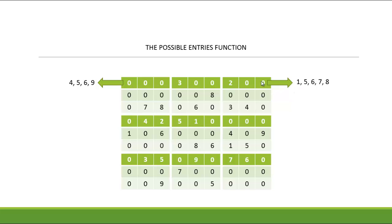Similarly you can do the same for any other zero position. For example, one can fit in, five can fit in, six, seven, eight — you apply the same logic and get the possible entries for any position in the entire board. Let's check out how this function actually works in the code.